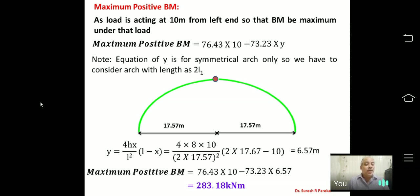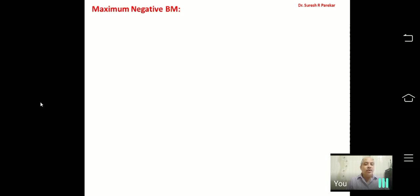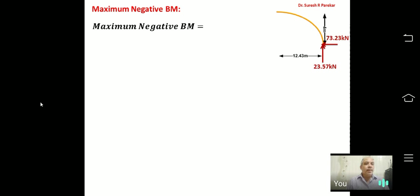This is the maximum positive moment. Generally, positive moment occurs on the loaded side and negative on the other. For maximum negative bending moment in the right part (no load), we use the maxima-minima condition: write M_XX at distance X from the right, take dM/dX = 0 to find the critical X.